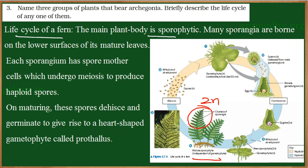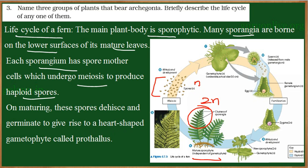Since the sporangium produces spores, the leaf is called a sporophyll. In ferns, the main plant body is sporophytic and the sporangia are also diploid in nature. Inside the sporangium, meiosis takes place and produces haploid spores. So from diploid, the chromosome number is reduced to half — that is haploid. This division is called meiosis.